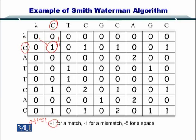So the diagonal element will be 0 plus 1, that is equal to 1. The top will be 0 minus 5, minus 5 is the gap penalty. And the left will also be 0 minus 5. So this will be minus 5, this will be minus 5 as well, and this will be 1. So from 0, 1, minus 5, and minus 5, you have to take the maximum.